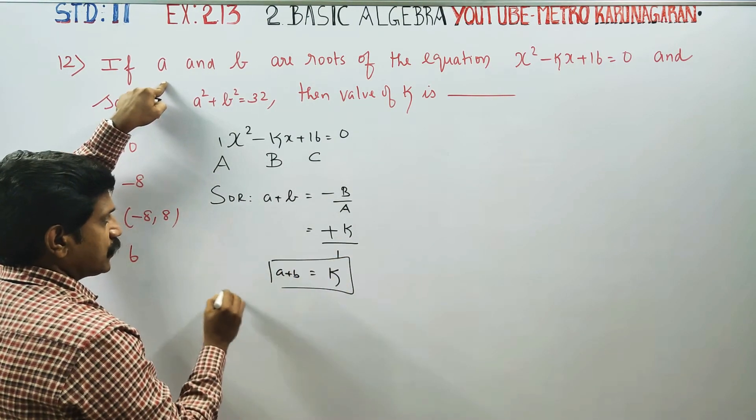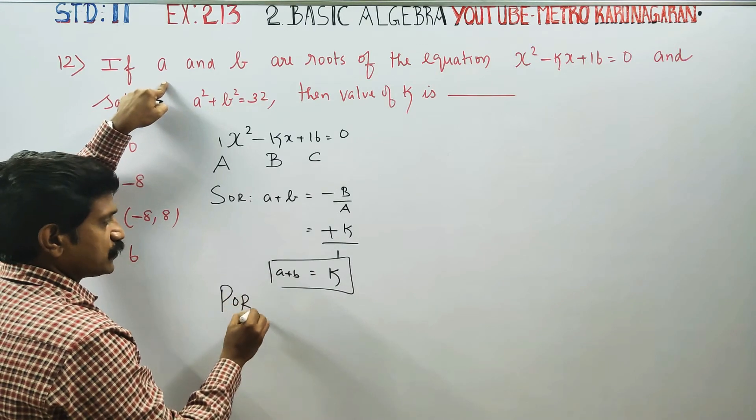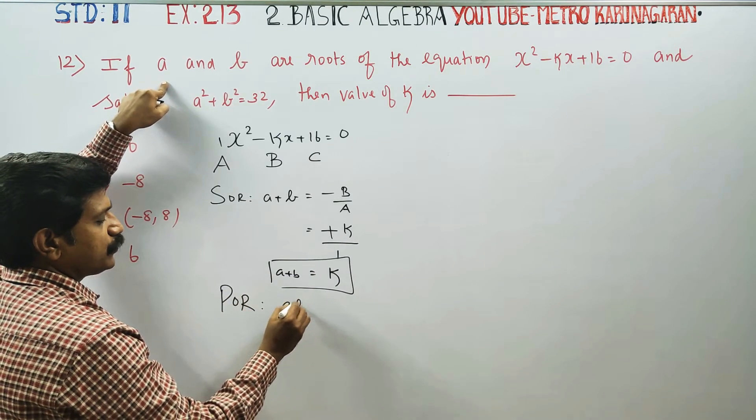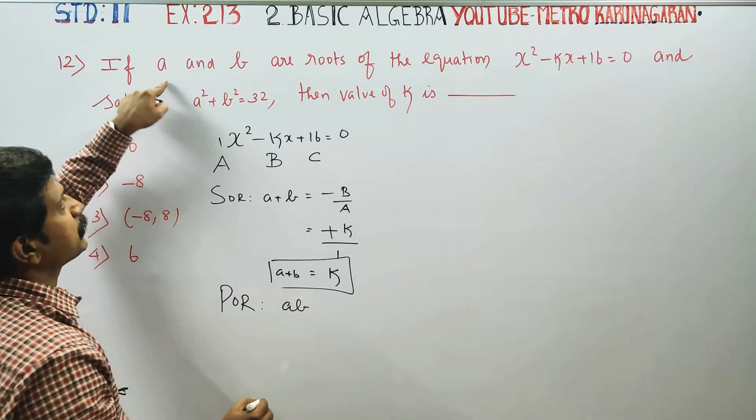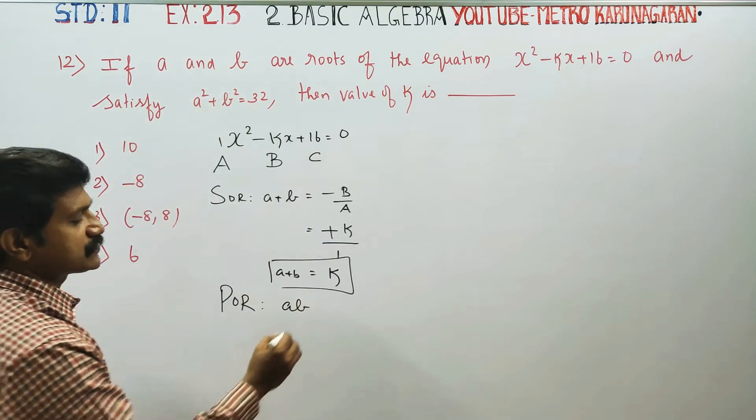The product of the roots, A into B, is given by C/A. Here that gives us 16 divided by 1, so A times B equals 16.